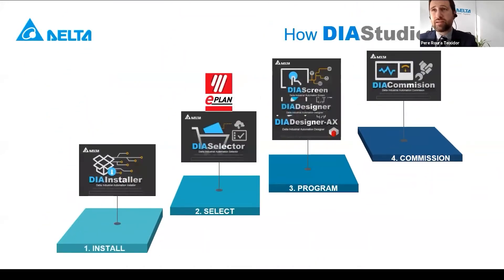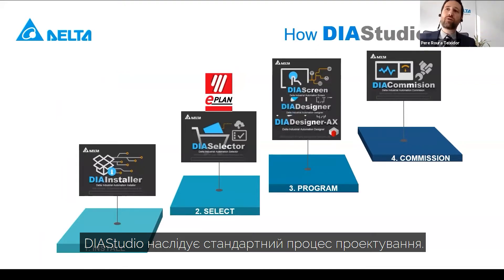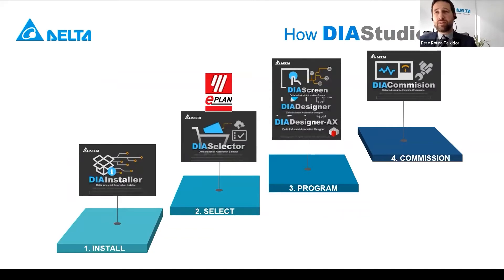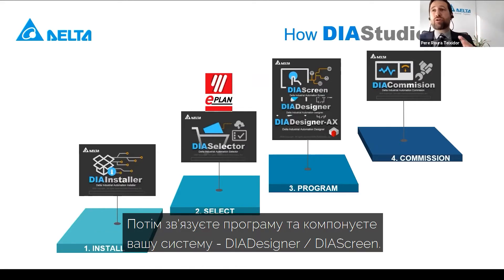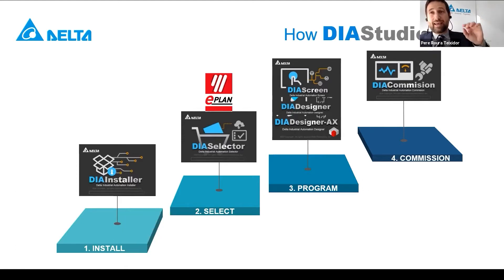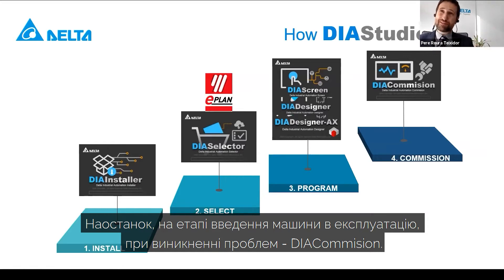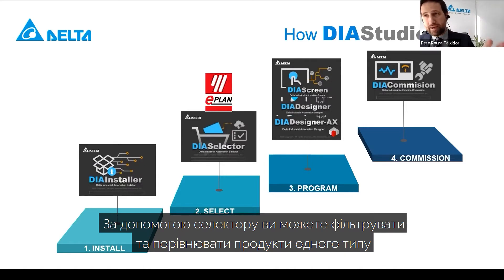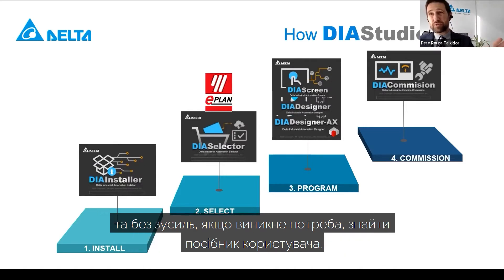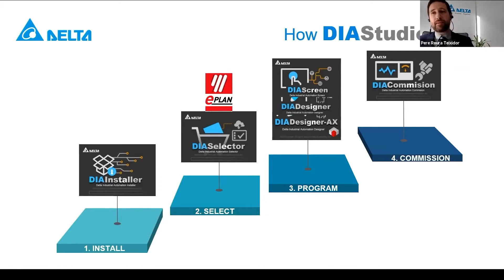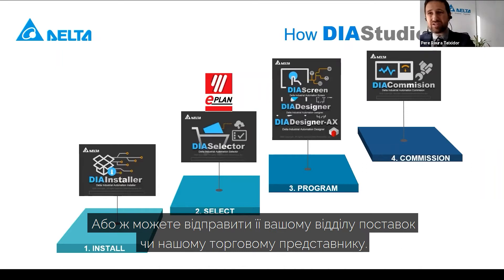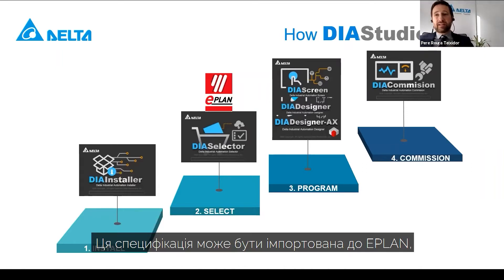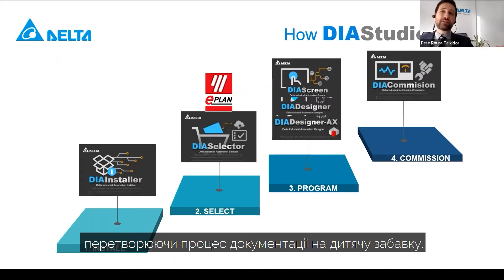DS Studio follows the same mental process an engineer goes through when designing and building a new machine. First, you choose the right products and create a draft budget via the Selector. Second, you interconnect, program, and configure your system via the Designer and Screen. And last but not least, you commission the full machine and prepare for problems via Commission. With the Selector, you can filter and compare all similar products of the same product range, and reach product brochures quickly and without any cost. Once the list is ready, you can keep it in your private free cloud storage and share it via a standard Excel file. The list of materials can also be imported to IPLAN, making machine documentation as simple as possible.